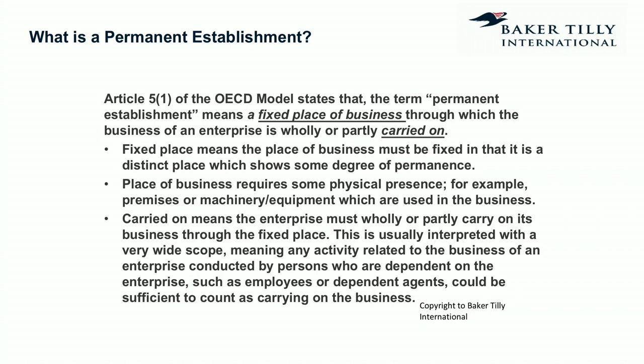Double tax treaties are very useful in helping us define and identify where we have a PE. Article 5.1 is the key one — it defines a PE as a fixed place of business through which the business of an enterprise is wholly or partly carried on. 'Fixed place' means the place of business must be fixed — it must have some degree of permanence. You don't have a permanent establishment, as the name suggests, unless it is a fixed place with some degree of permanence.